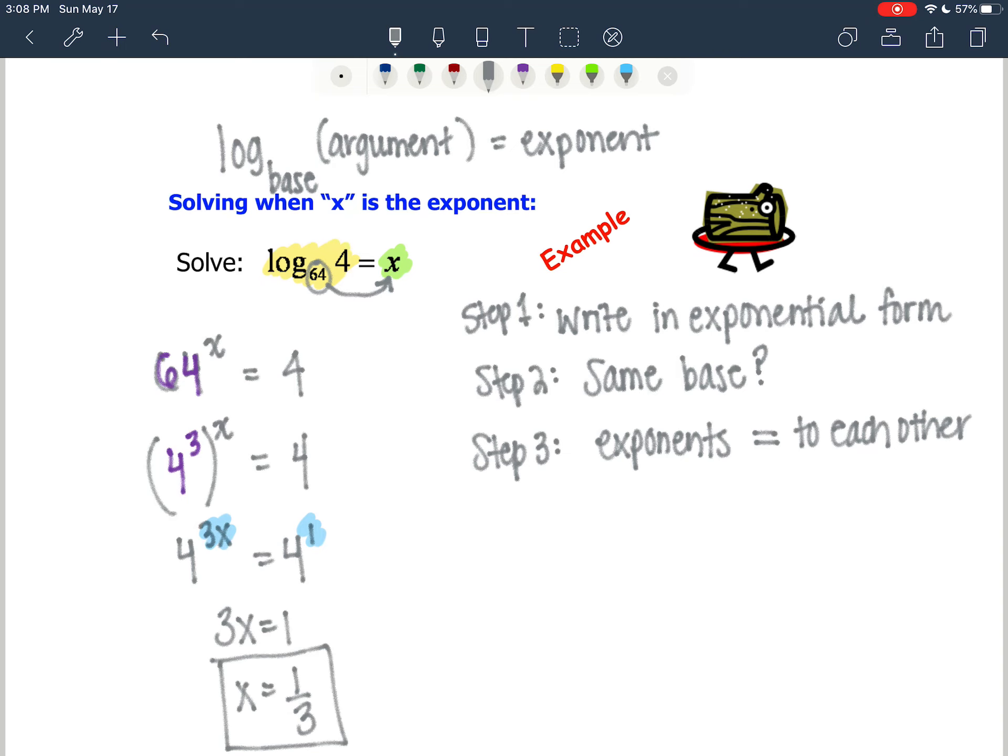We plug that back in. Log base 64 of 4 is equal to 1/3. We check our answer. 64 to the 1/3 power is indeed equal to 4.